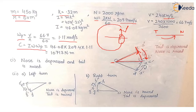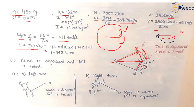If the aircraft turns right instead, the direction of the reactive couple is opposite — it becomes clockwise. As a result, the tail is raised and the nose is depressed.